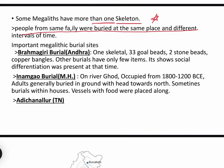An important site where megalithic burials were found is Brahmagiri, situated in Andhra Pradesh. Here, one skeleton shows only one person was buried, but with 33 gold beads, 2 stone beads, and copper bangles — many items for just one person. This indicates social differentiation: some people were rich and got more burial items, while poorer people received fewer items.